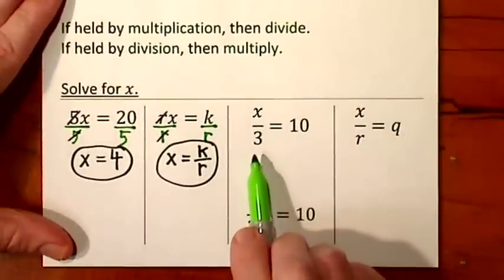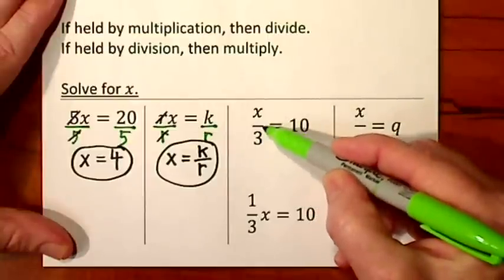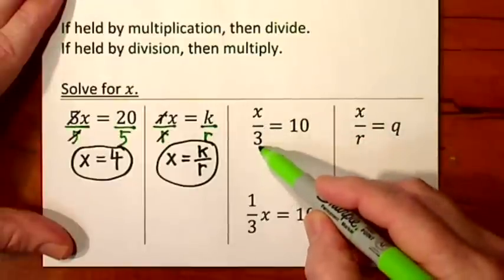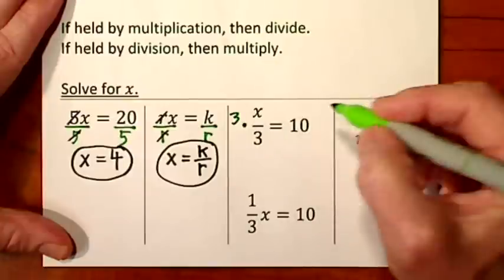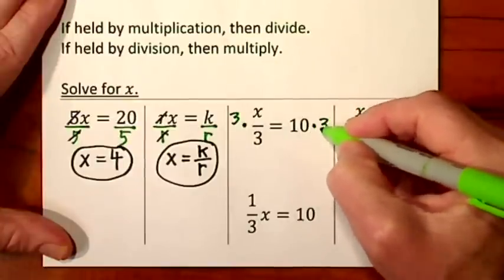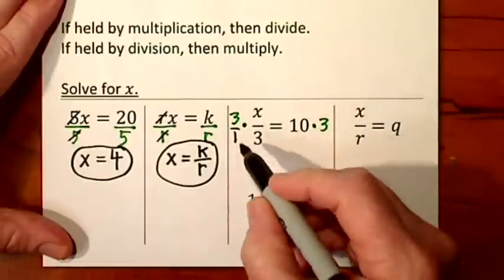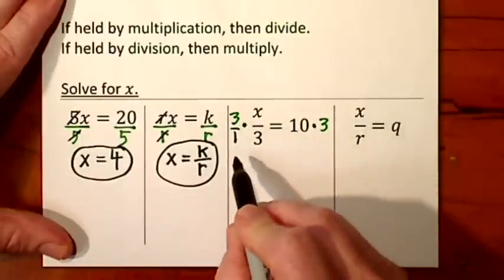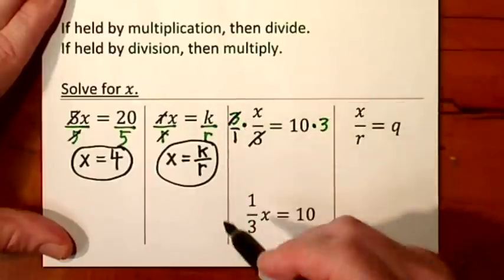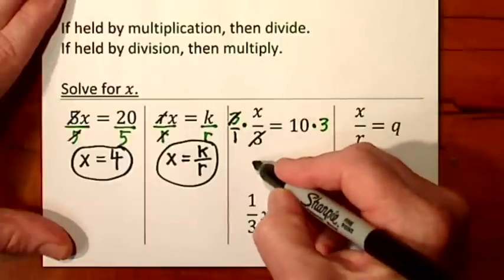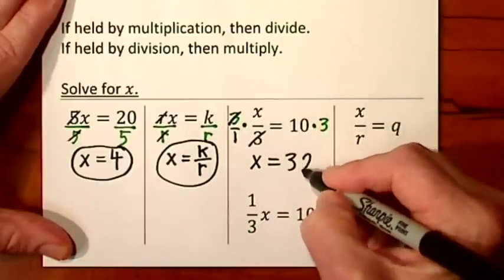Looking at this equation, to get x by itself I want to get rid of the 3. It's held by division — that's what this bar indicates. The opposite of division is multiplication, so I will multiply by 3 on each side of the equal sign. If it helps you to see this as 3 over 1 — I haven't changed the value, it's still 3 — you can cancel these terms. 3 goes into 3 one time, so I have 1x. Bring down the equal sign: 10 times 3 is 30.